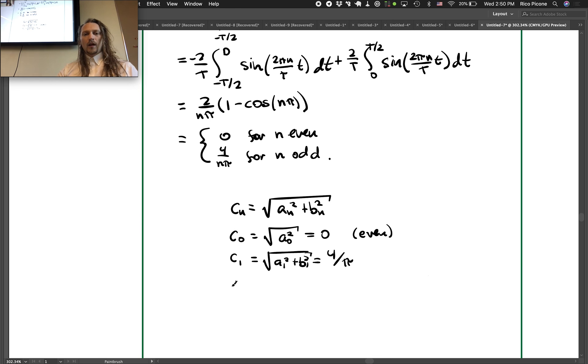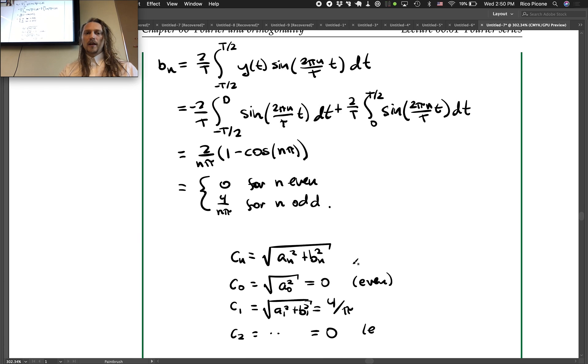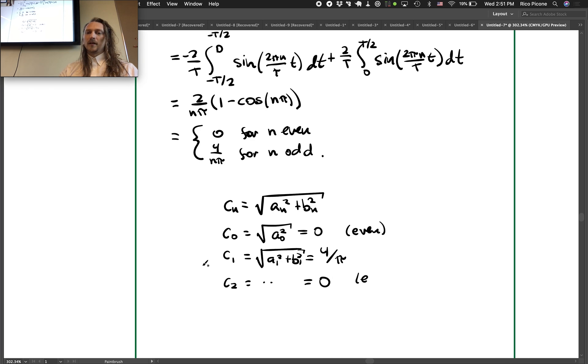And c2 is similar, it's just going to equal 0 because a anything is 0 and then bn only for odd bn so we have something non-zero.